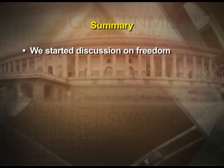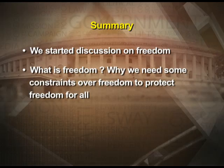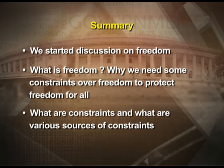To conclude, let us summarize what we discussed in this lecture. We started with the concept of freedom — what freedom is and why it is an important fundamental value. But if everyone is driven by their own interest, there will be chaos in society, so we need some constraints over individual freedom to protect freedom of all. We discussed the various sources of these limitations — constraints on individual behavior that bring general order in society. In the next part, we will discuss in greater detail why we need constraints upon our behavior. Till then, you can enjoy reading this part of the chapter. Thank you.